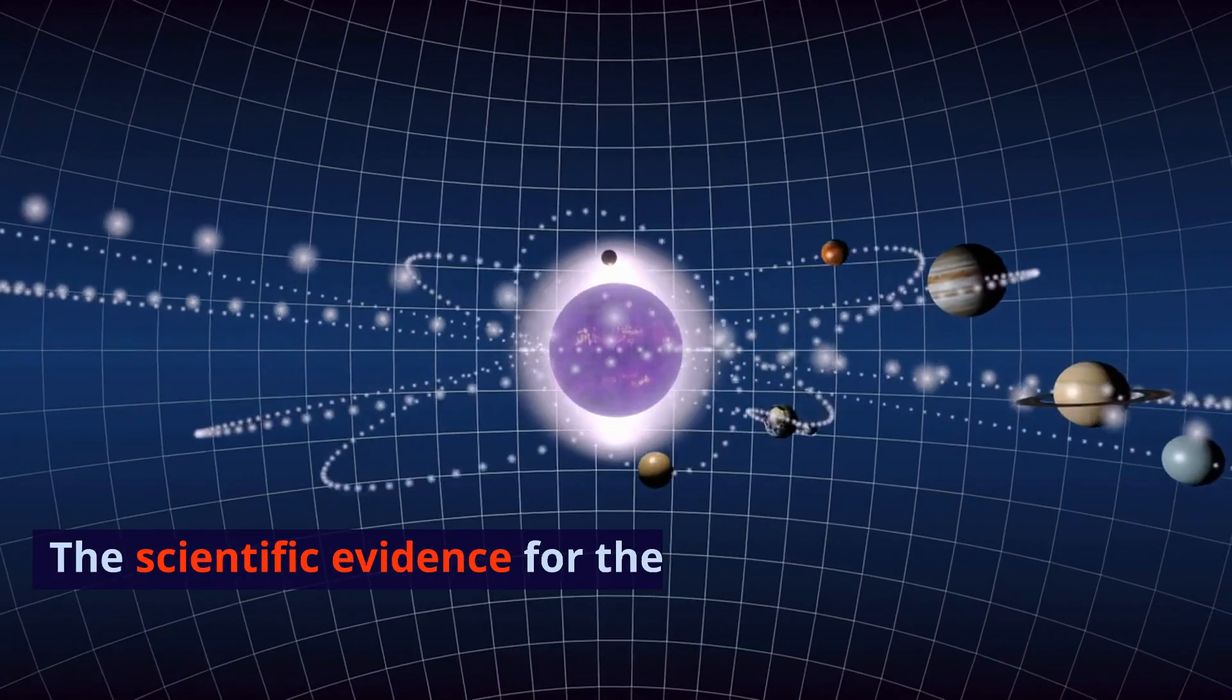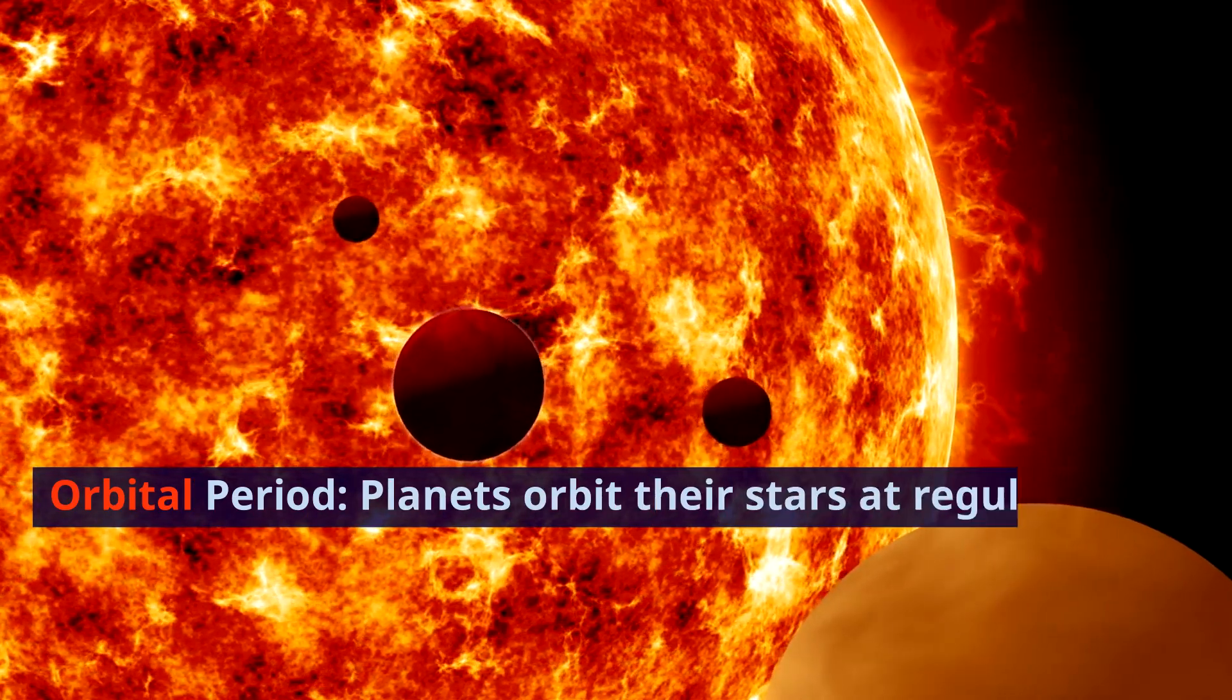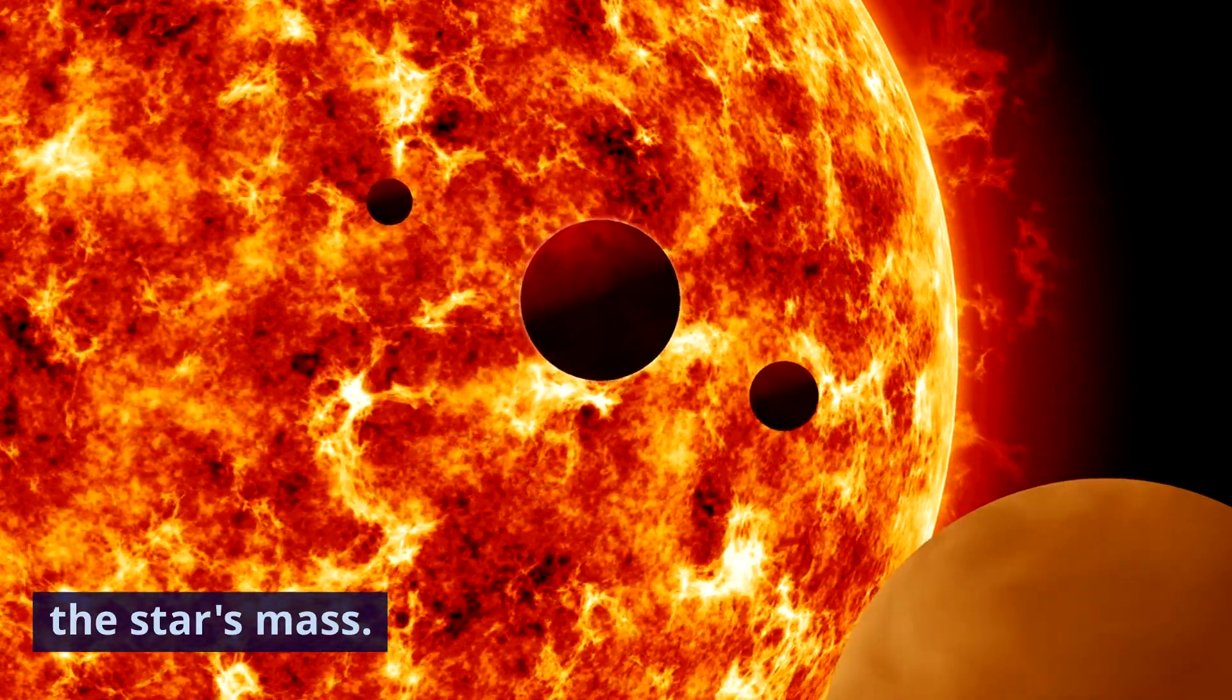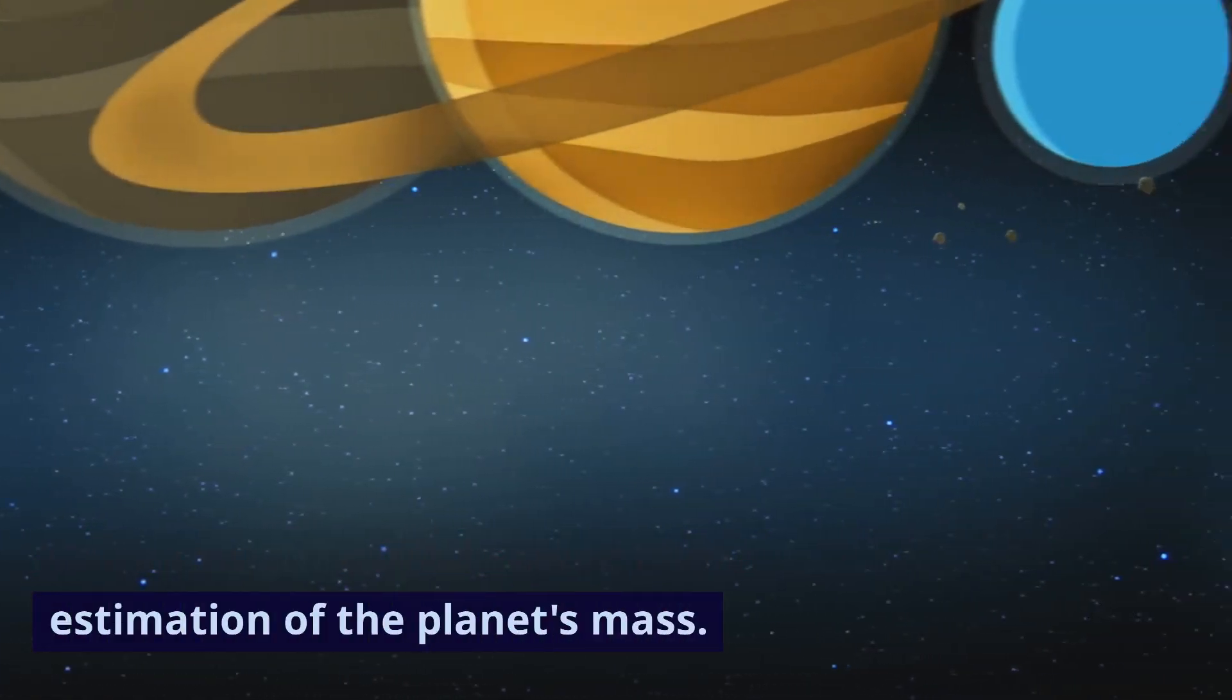The scientific evidence for these planets is as follows. First, orbital period: planets orbit their stars at regular intervals, determined by the planet's mass and the star's mass. Measuring the orbital period allows for the estimation of the planet's mass.